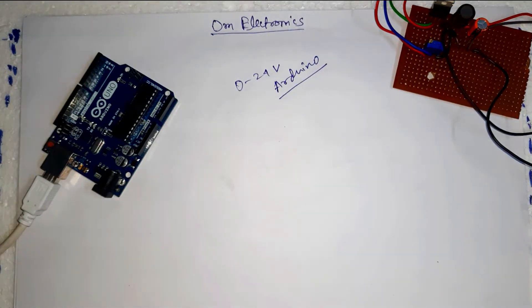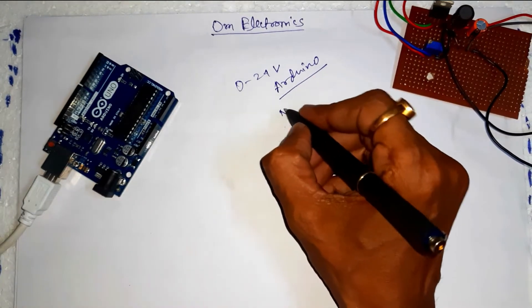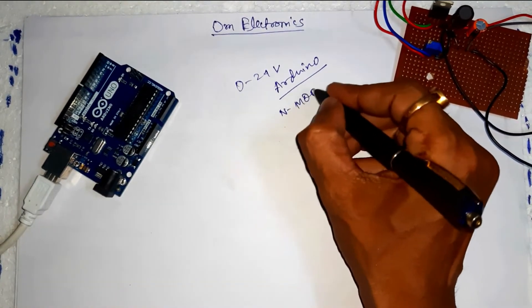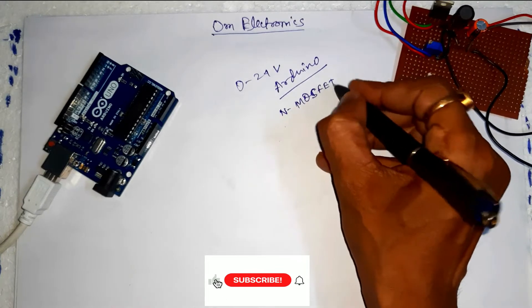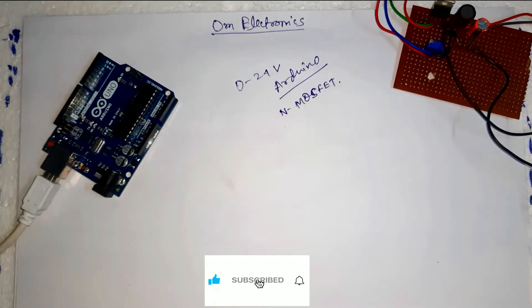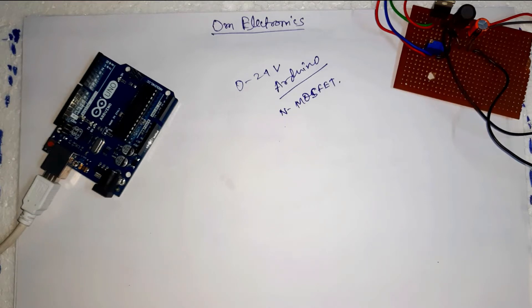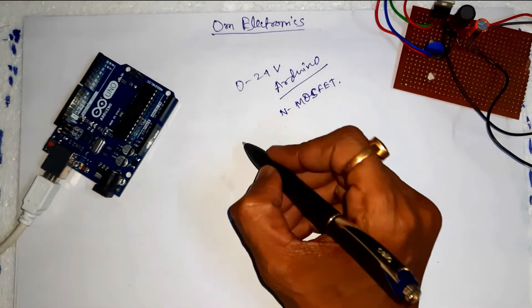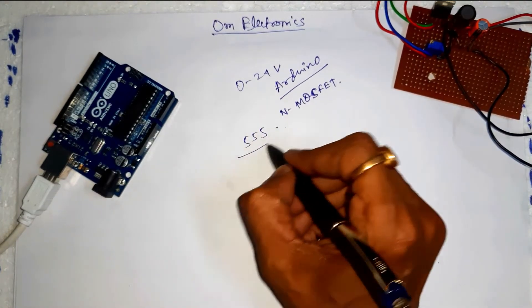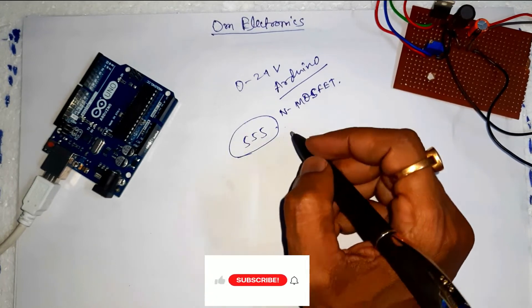In this project we are going to make a buck converter circuit using Arduino and an N-channel MOSFET. A buck converter is a DC to DC converter. Key components of a buck converter are a MOSFET — either N-channel or P-channel — and a high frequency square pulse generator. Arduino is used here as a pulse generator; a 555 timer IC can also be used for this purpose.